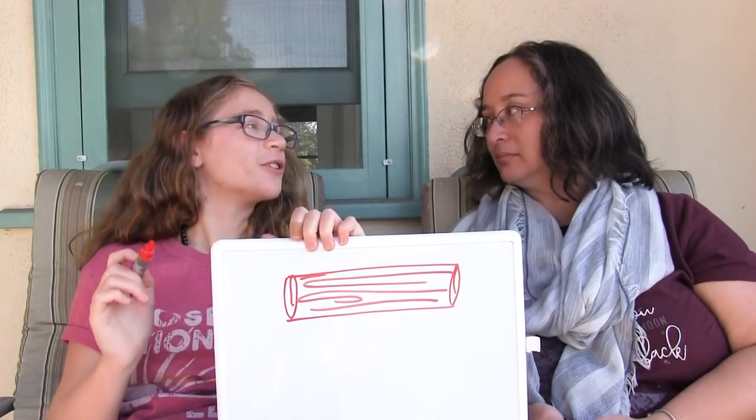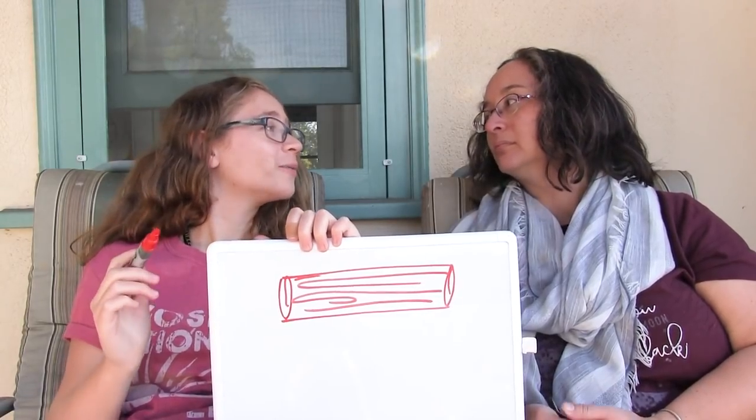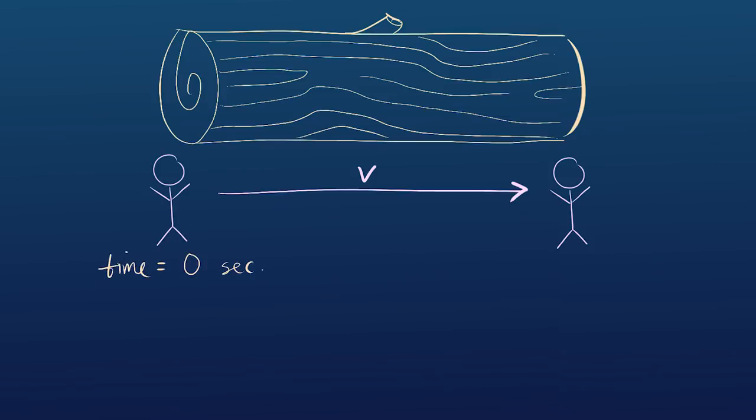So say that I want to measure the length of this log. How am I going to do that? I ask you to run at a speed v and I'm going to time how long it takes you to run from the left end of the log to the right end of the log. I'm going to measure the time when you're at the left end of the log and when you're at the right end of the log. And let's say I time you and it takes you 10 seconds. So I know it took you 10 seconds. I know you're traveling at a speed v. So the length of the log is 10 times v. Easy enough.